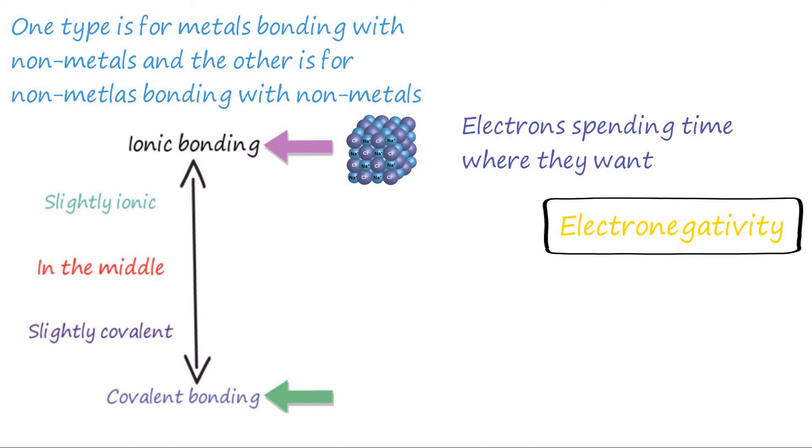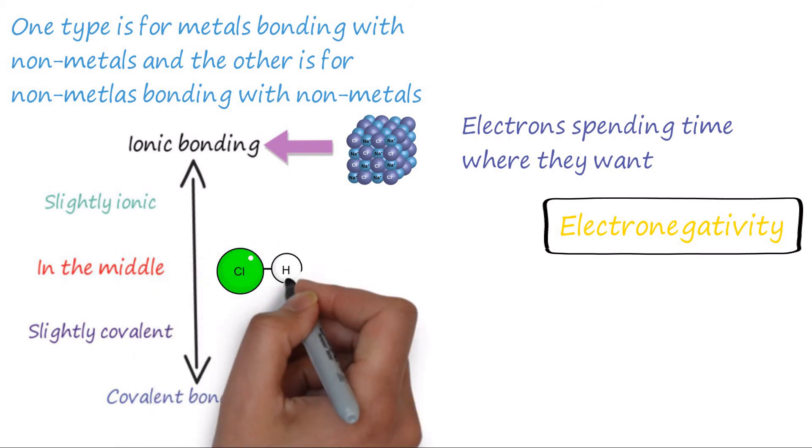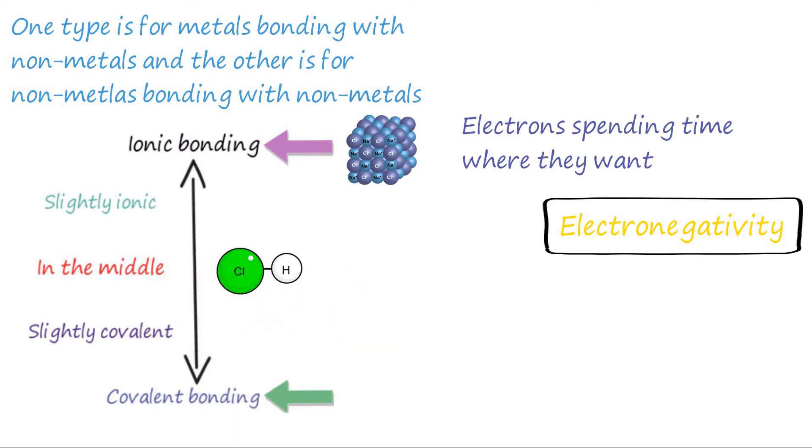This means that electrons want to spend all their time with chlorine rather than sodium. We do this with other compounds and find that they are placed all along the spectrum, not just at each end.